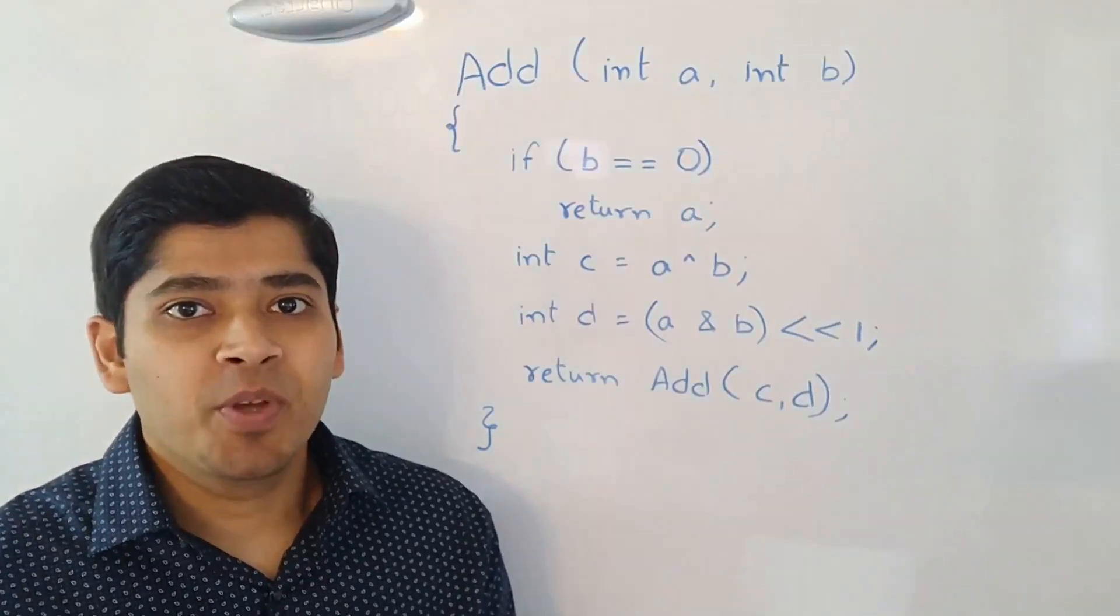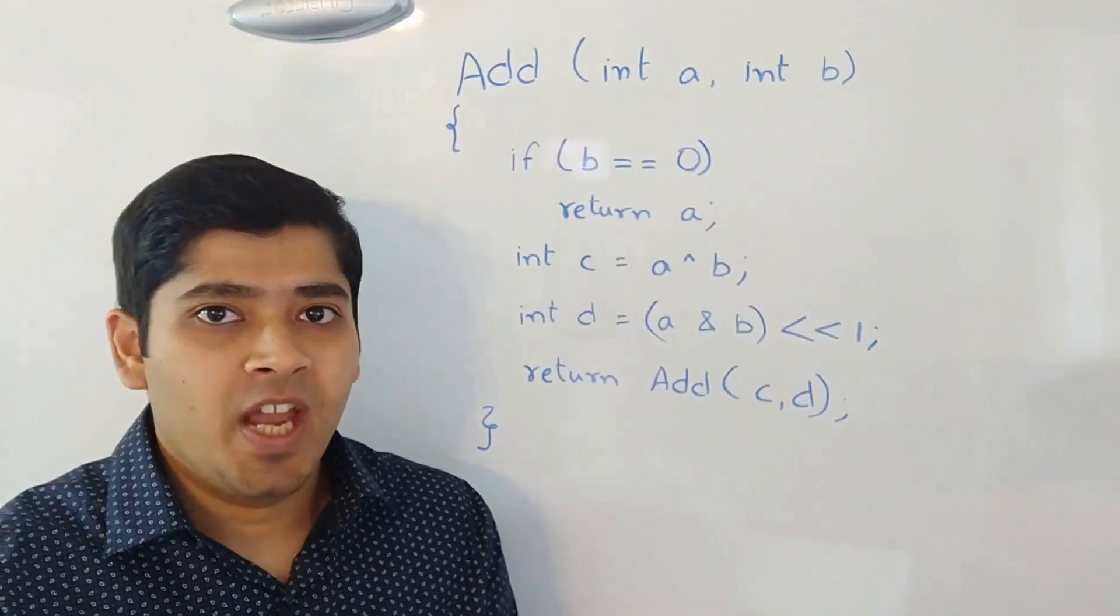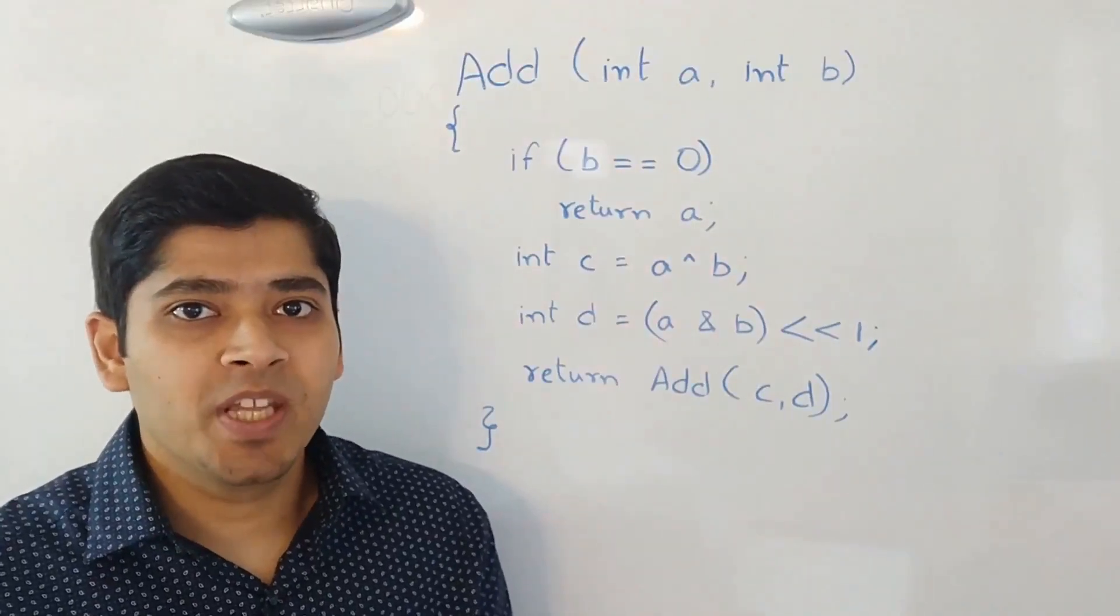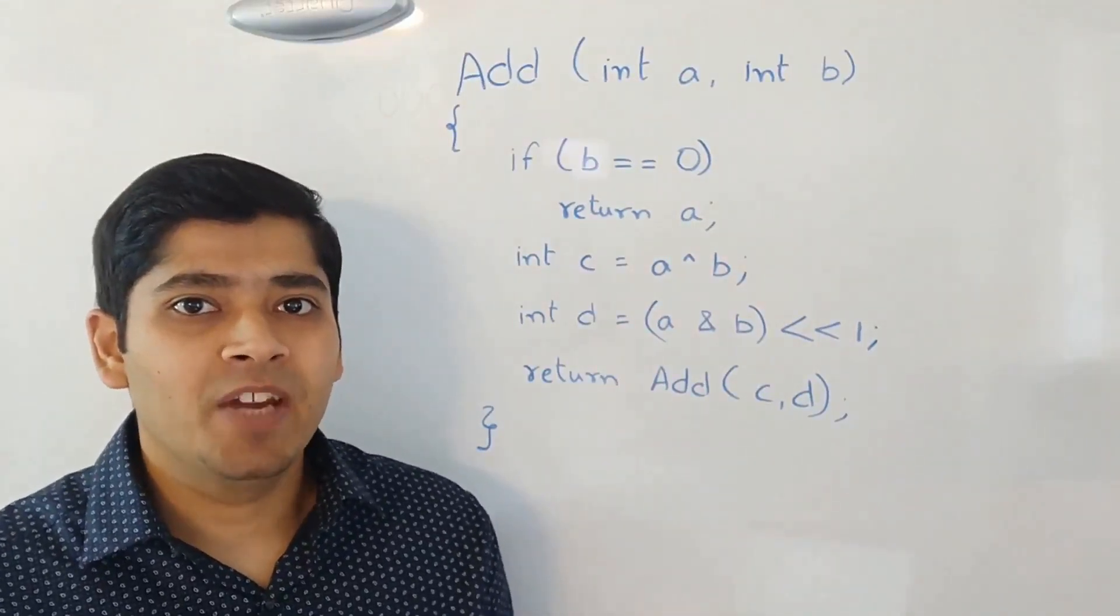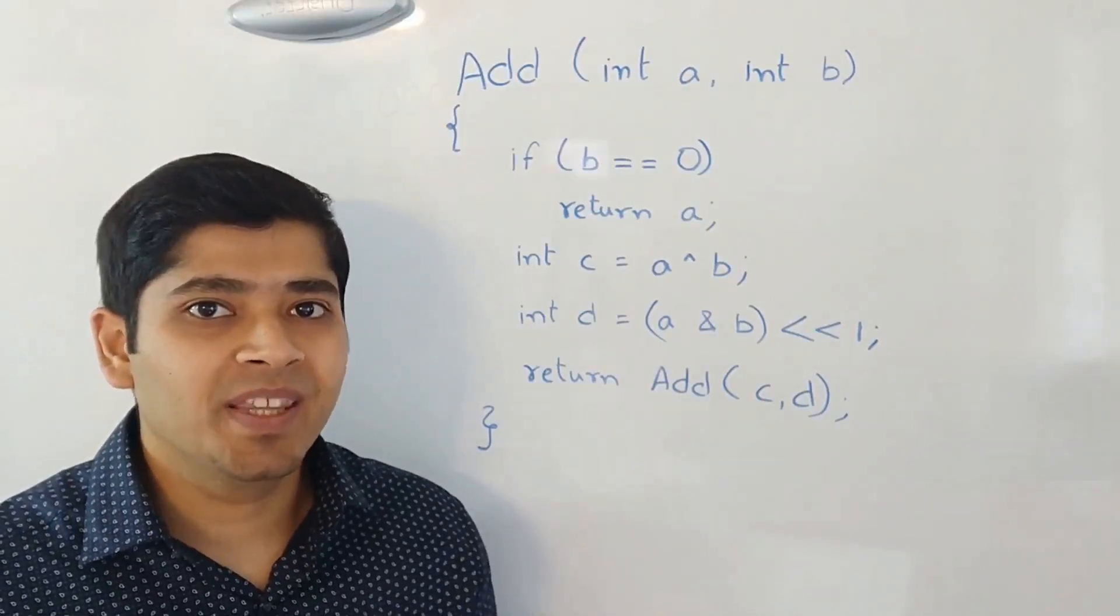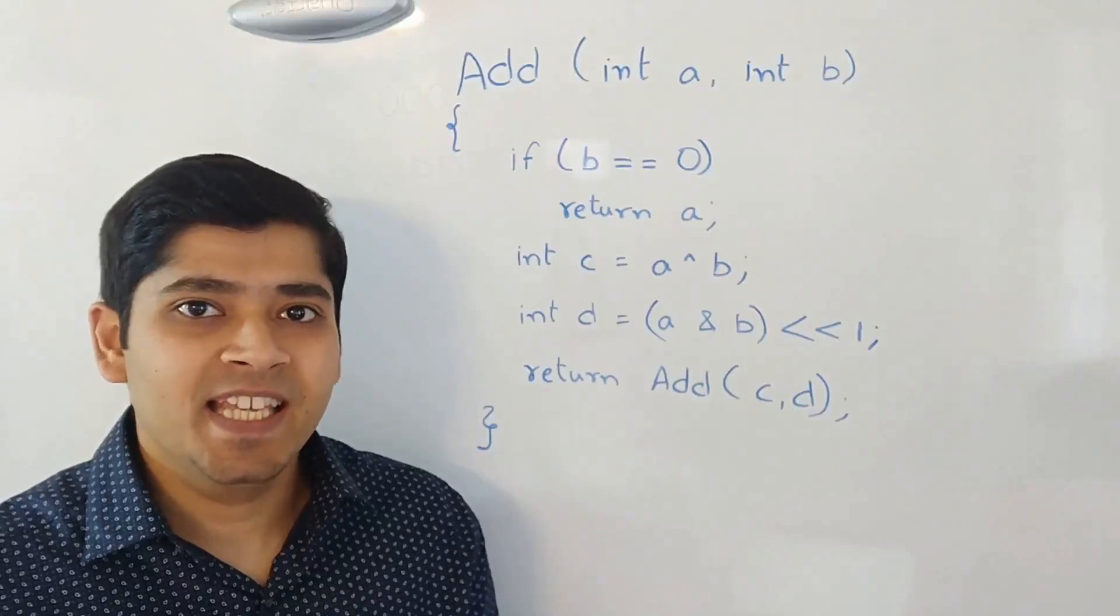Next, we compute the XOR of A and B and we save it in C. Then we compute the AND operation followed by left shift of 1 and we save it in D and then we recursively call our method of adding C and D.